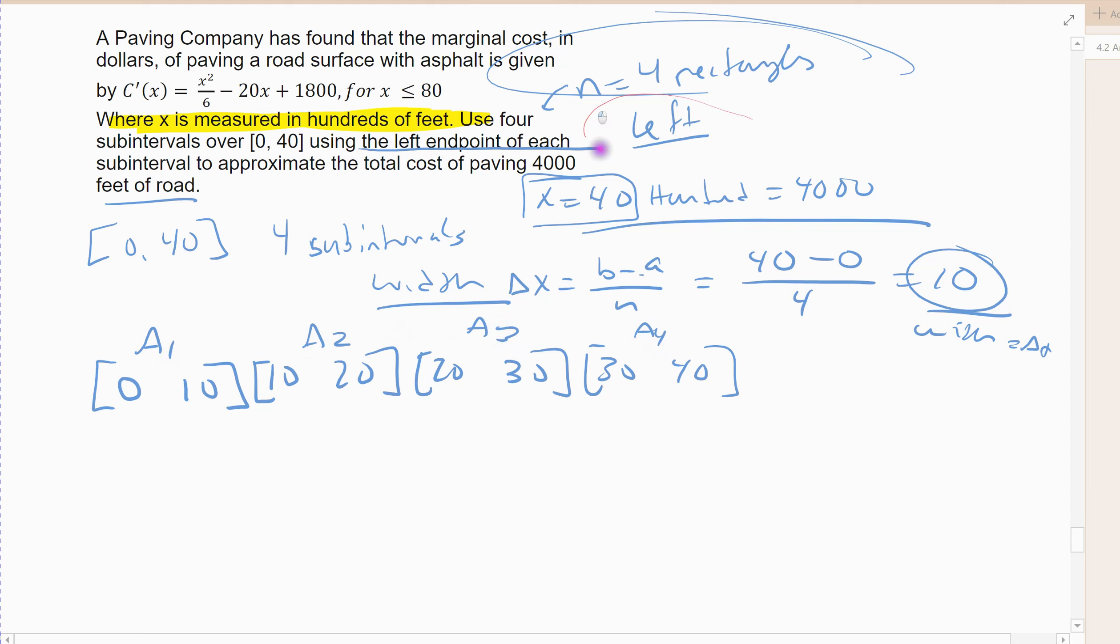I'm going to use the left end point. So meaning area 1, I'm going to use 0 to find the height. Area 2, I'm going to use 10 to find the height. Area 3, I'm going to use 20 to find the height. Area 4, I'm going to use 30. So remember, the areas are found by taking the change in x times the function value using my end point. In this case, we're going to use the left ones.